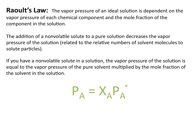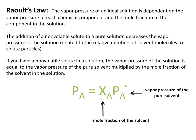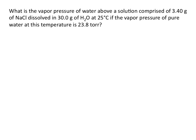Because the non-volatile solute has essentially no vapor pressure. In this equation, X sub A is the mole fraction of the solvent in the solution, P sub A naught is the vapor pressure of the pure solvent, and P sub A is the new vapor pressure of the solution. What is the vapor pressure of water above a solution comprised of 3.4 grams of NaCl dissolved in 30 grams of H₂O at 25 degrees Celsius if the vapor pressure of pure water at this temperature is 23.8 torr?